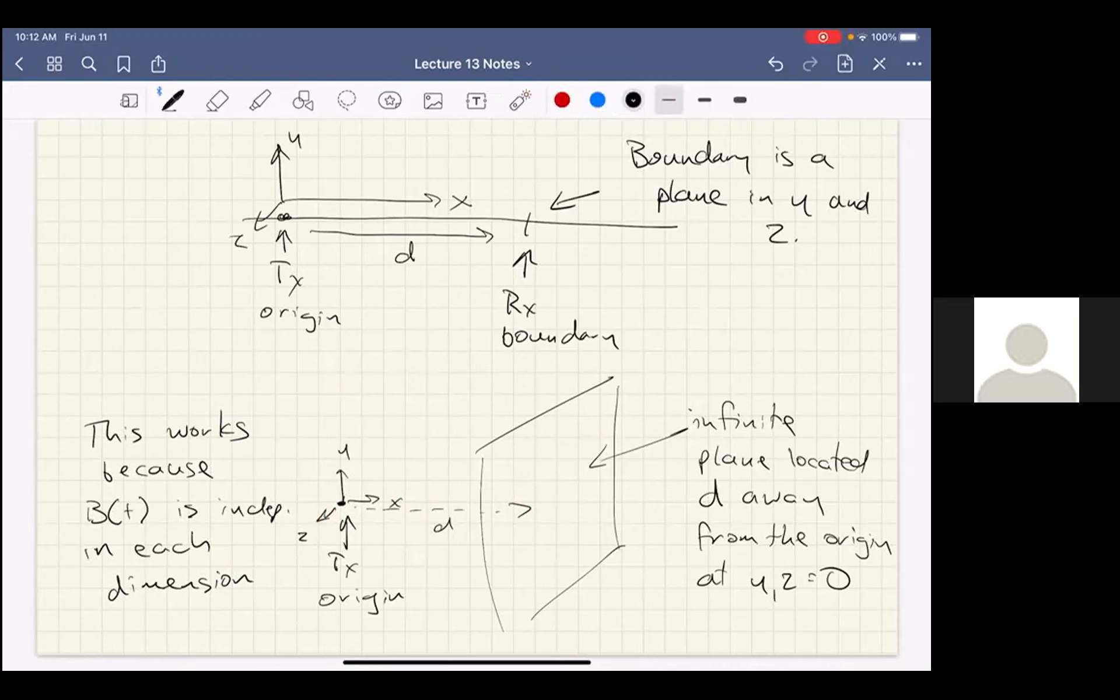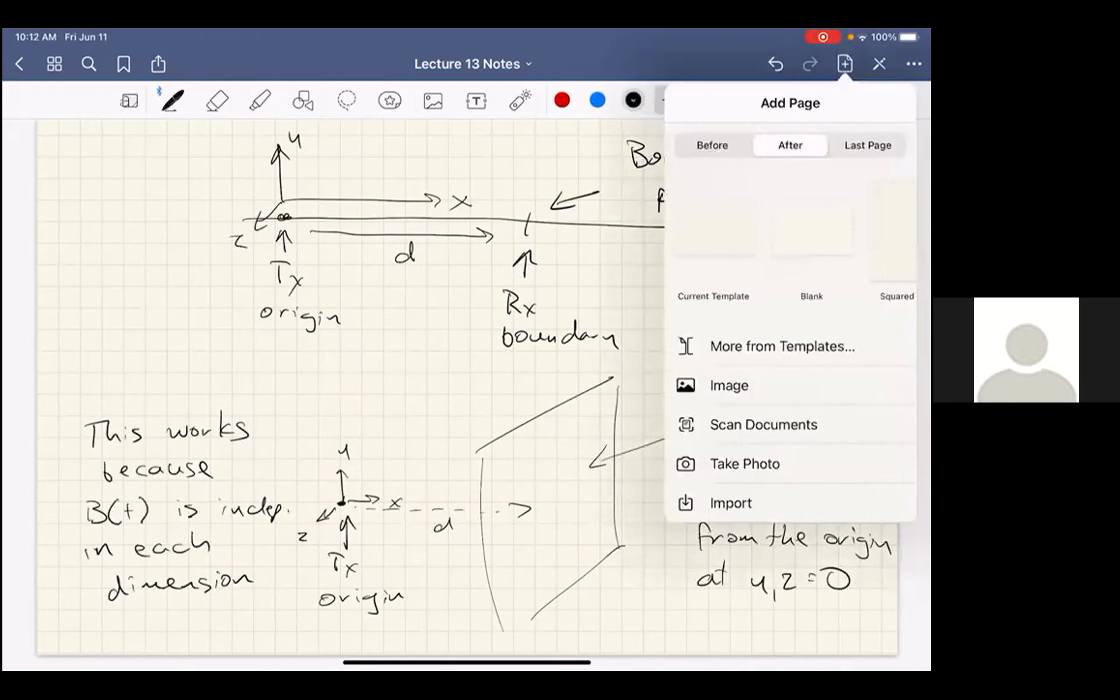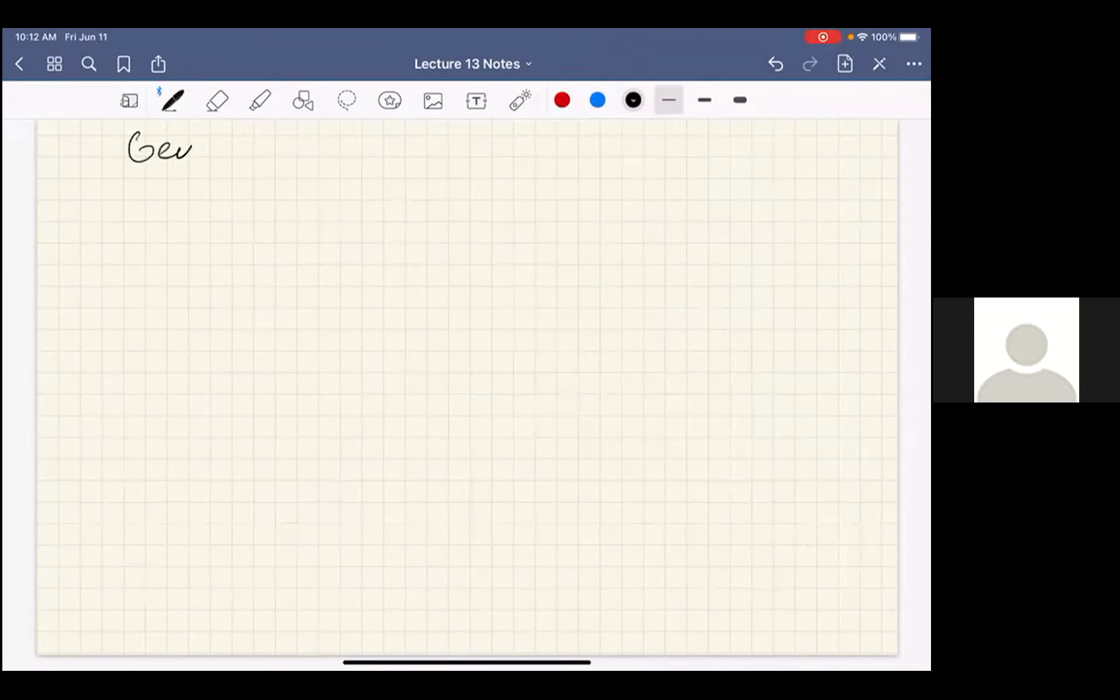But now we're going to do something a little different. We're going to generalize this to spatial modulation schemes. So now what I'm going to do is I'm going to have more than one transmitter. They're again going to be point transmitters. I'm going to have two just as an example. You can have as many as you want. And then the receiver is going to be a sphere.